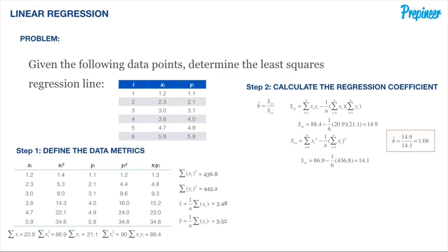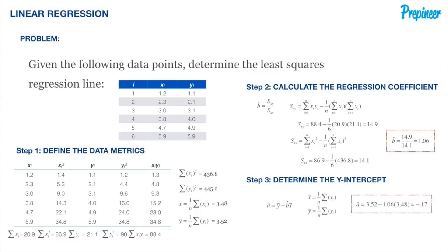Our next step is to determine the Y-intercept by plugging in the mean of our X values, the mean of our Y values, and the regression coefficient we just calculated. Doing this, we get the equation: 3.52 minus 1.06 times 3.48, giving a value of negative 0.17.